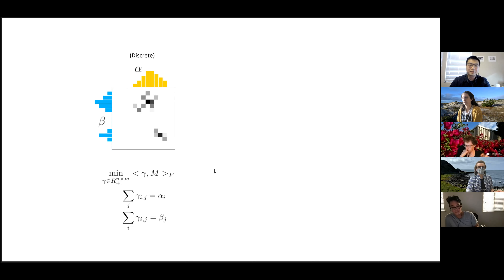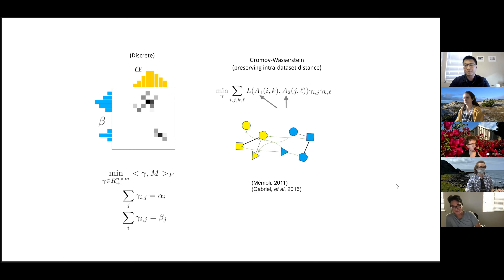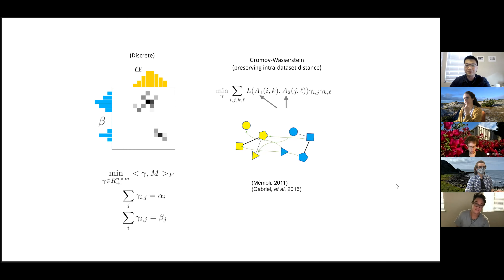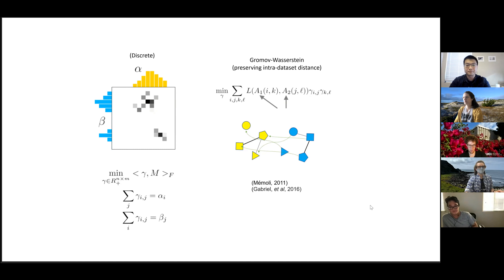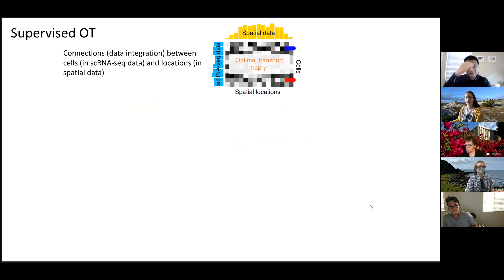As a result, gamma gives us a coupling matrix — an improved coupling matrix because intuitively a cell won't get matched to so many spots and spots won't get matched to so many cells; we have control over the mass. Additionally, there is a Gromov-Wasserstein formulation where we use the additional spatial proximity in spatial data. In addition to considering the inter-dataset dissimilarity, we can also preserve the intra-dataset distance when finding the coupling matrix gamma, promoting the mapping of spatially close cells to similar cells in single-cell data.